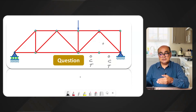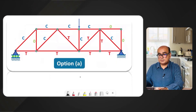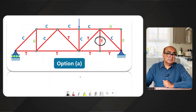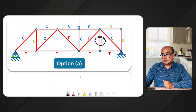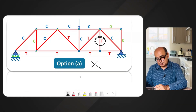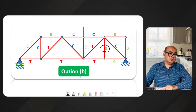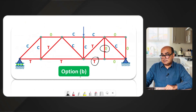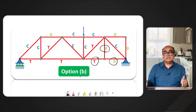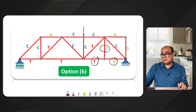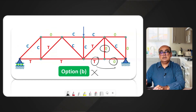Now let's assess the options. In option A, observe that we have tension shown here — but tension is not possible since this force has to be zero because it is entering the joint as a third member into collinear members. So option A is incorrect; we eliminate it. In option B, we have a zero force here which is fine, but these two collinear member forces should be equal — yet here we have two different forces, which means option B is incorrect as well.